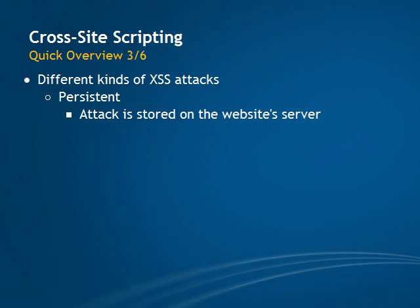There are three different kinds of XSS attacks. The first is the so-called persistent attack. In this case, the attacker's code is stored on the website's server, for example in a guestbook application. The user just has to visit said guestbook and he is immediately exposed to the attacker's code without having to go through a special link.